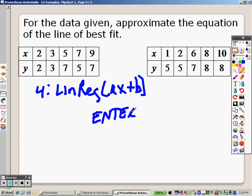When you press ENTER one more time, you get a list. It says Y equals AX plus B. Then right below that, it says A equals 0.646 and B equals 1.439.